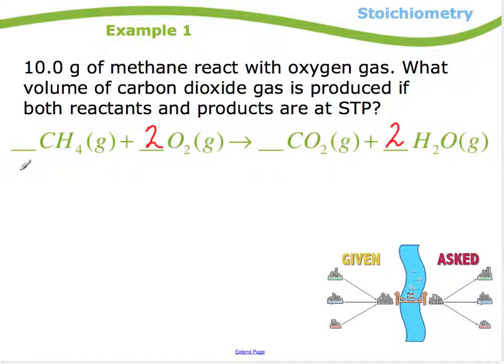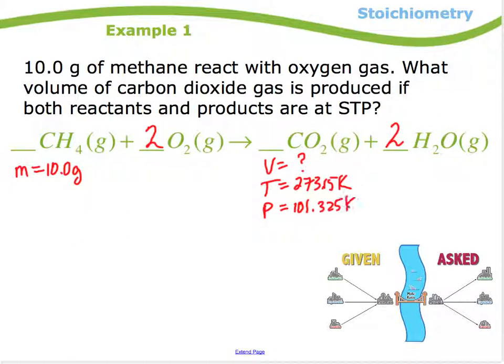So I have 10 grams of methane, so I have a mass of 10.0 grams. Reacts with oxygen gas. What volume of carbon dioxide gas is produced? So here, volume of carbon dioxide produced, I don't know. If both reactants and products are at STP. Well, STP wouldn't have any effect on a weight or a mass of something, so I don't need to put it there, but I do need to include my temperature and my pressure here. And STP, if I recall correctly, the temperature is 0 Celsius or 273.15 Kelvin, and the pressure is 101.325 kilopascals.